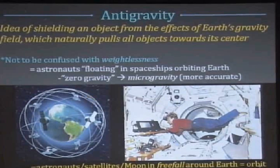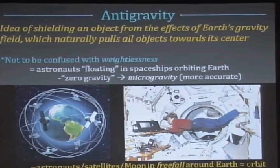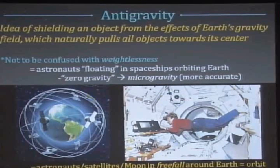The idea of anti-gravity is you are shielding an object, a human, something from the effects of Earth's gravitational pull that wants to pull everything down towards its center. So just so we are not confused, this is different than what satellites and astronauts experience while they are in space. This used to be called zero gravity, but now the more proper term is microgravity because even in space they're still under the influence of Earth's magnetic field.